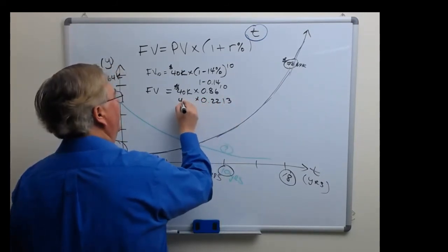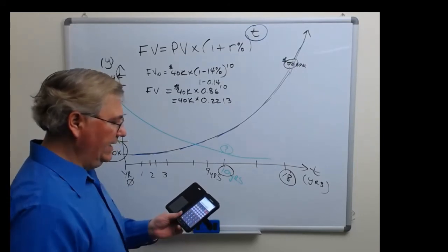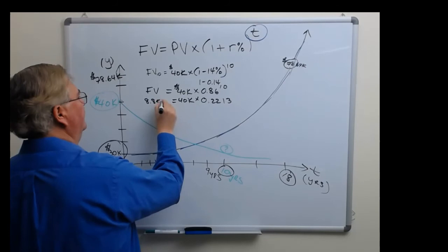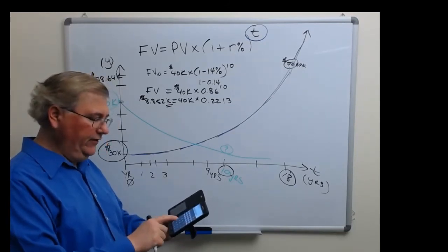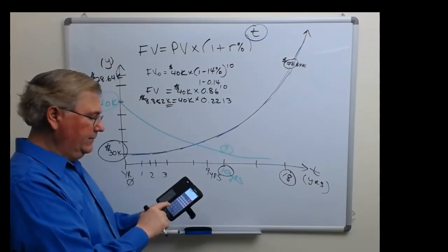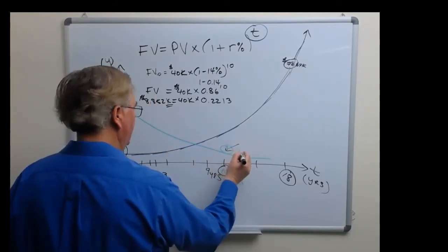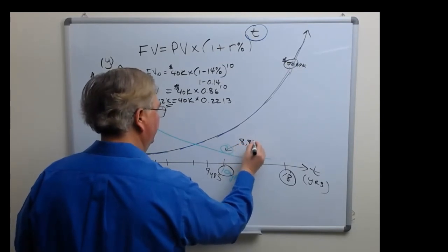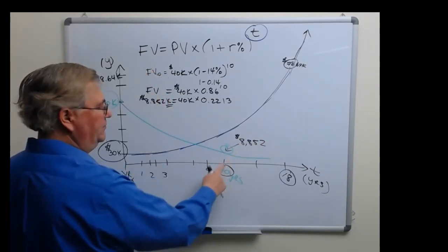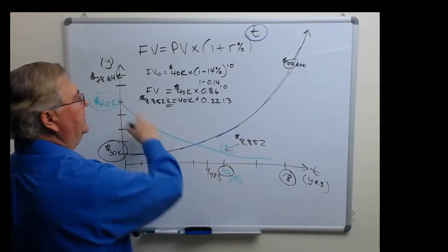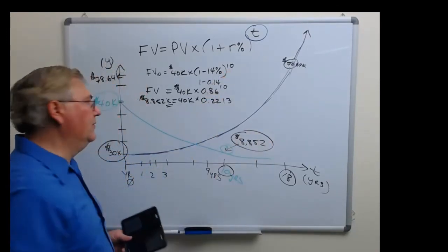Multiply that by 40,000, and we get 8.852k. Once again, k stands for 1000. If you want to convert this into dollars and cents, just multiply 8.852 by 1000, and we get $8,852 and six cents. So this is the projected price, the future value of this automobile that's depreciating at 14 percent a year for 10 years. About $8,900 from a starting price of $40,000.